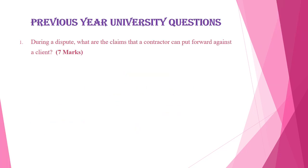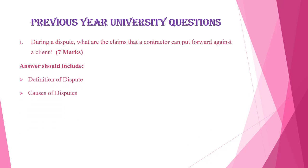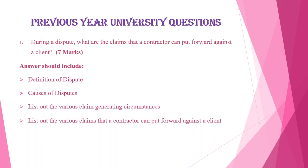Today our topic is the previous year university questions from Module 3. The first question was: during a dispute, what are the claims that a contractor can put forward against a client? This is asked for seven marks. Your answer should contain the definition of dispute, the causes for dispute, the various claims, the claim-generating circumstances, and the various claims a contractor can put forward against a client.